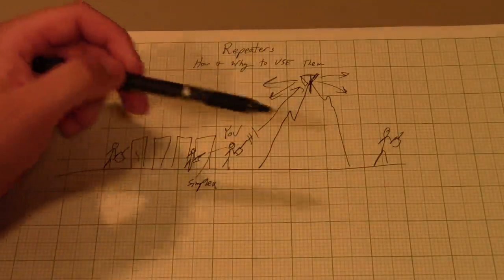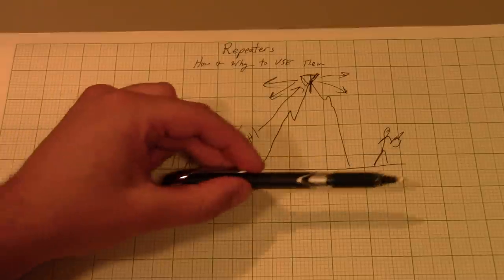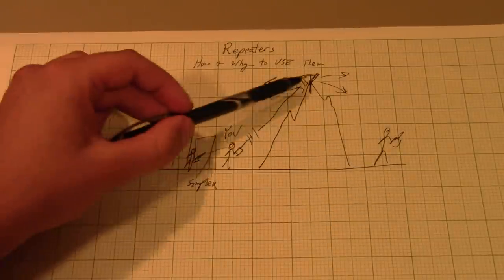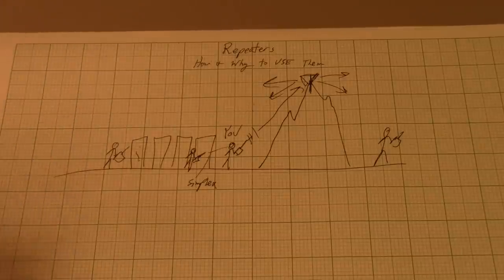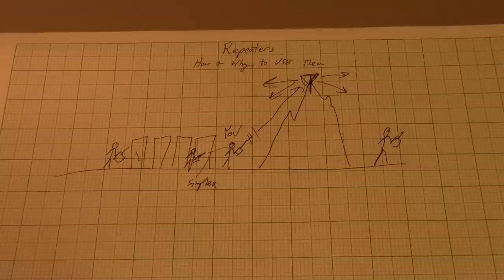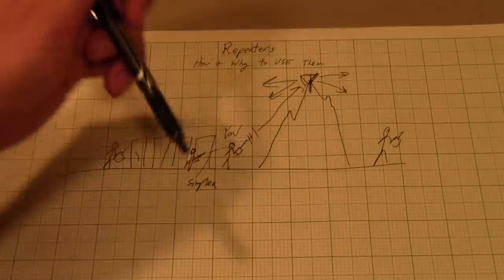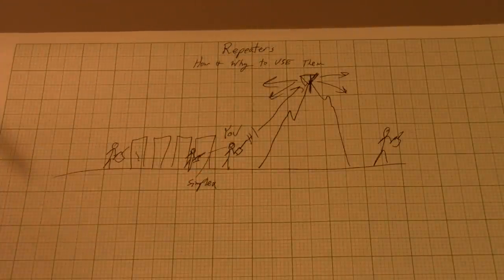Once you stop transmitting and the repeater shuts down, your buddy can then start transmitting, the repeater will hear it, and repeat it back to you. The concept can be taken ad nauseum to what are called large linked systems, but that's beyond the scope of this first talk. So let's just talk about how you do this.